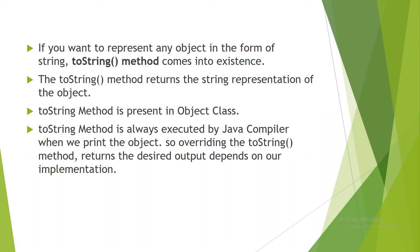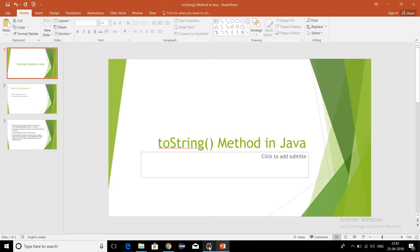Overriding the toString method returns output that depends on your own implementation. This means we can override the toString method and provide our own custom implementation inside it. Now we'll move to Eclipse and see an example of the toString method.